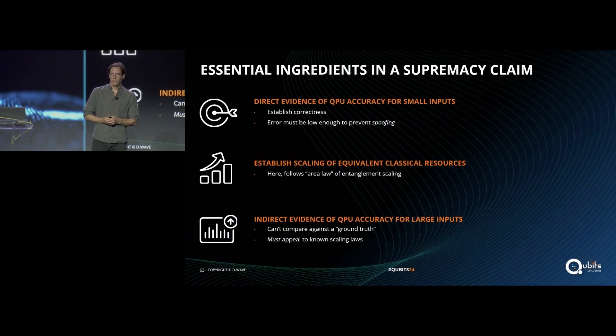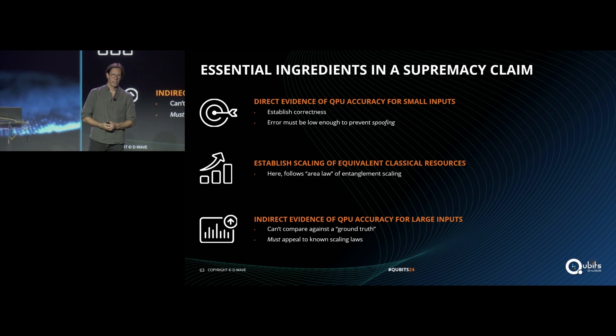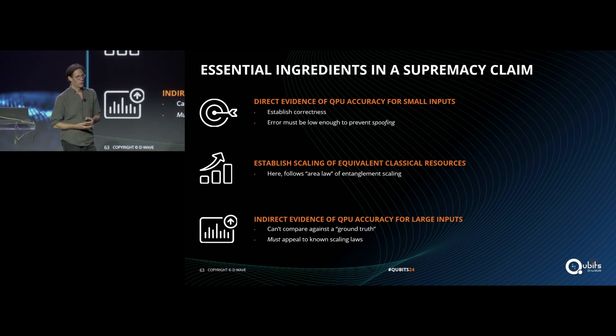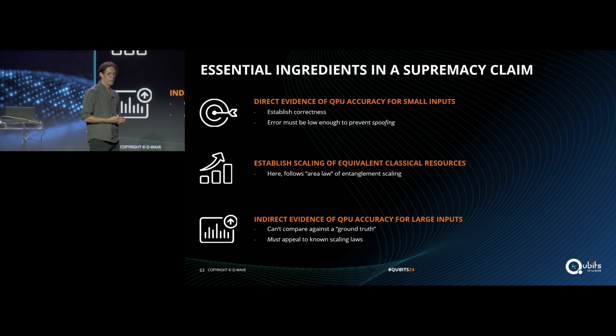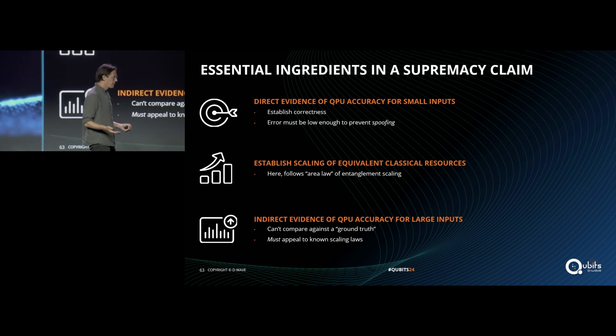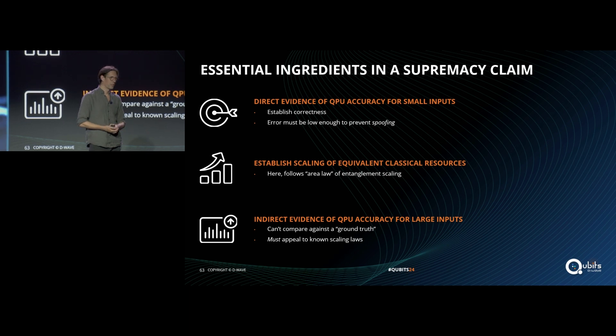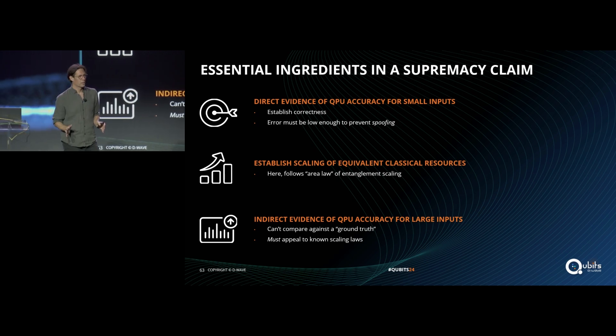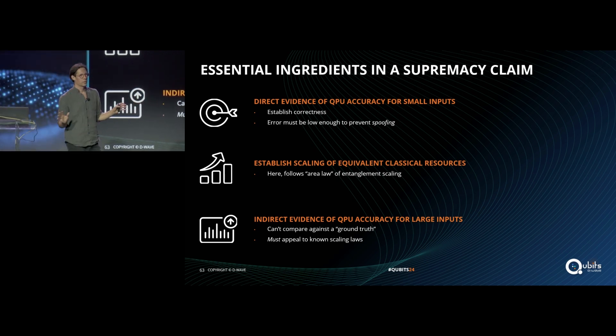I just want to talk for a few minutes about the general structure of a supremacy claim. No matter how you're doing it or what your application is, if it's just a toy problem or a real application, it has to follow a certain structure, logically speaking. You need three main ingredients. The first ingredient is direct evidence that you're doing the right thing when you can confirm it with a classical simulation. If you do a very small problem and your quantum computer is giving you a different answer than your classical computer, then there's a problem. You need to make sure you've got your feet on the ground, you know where you're starting, and you have a good characterization of the quantum system that agrees between classical and quantum.